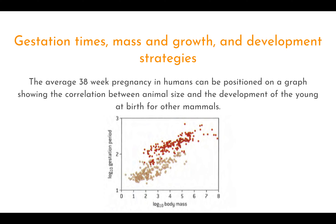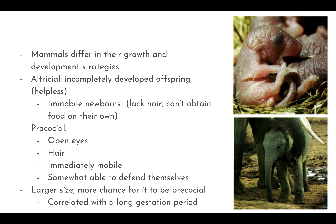Application: gestational time, mass, growth, and development strategies. The longer the gestational period — time inside the womb — the more developed the offspring is at birth. Example: elephants have a gestational period of 22 months; baby elephants are fully developed and can walk immediately. Humans have a nine-month gestational period and cannot walk at birth.